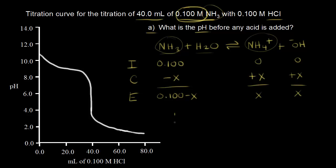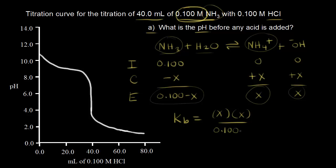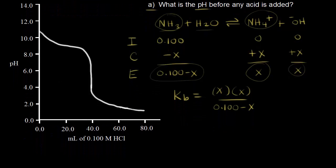Next, let's write our equilibrium expression. Since this is a base, we write Kb. We have concentration of products over reactants: Kb equals the concentration of ammonium times the concentration of hydroxide, that's X times X, over the concentration of ammonia, which is 0.1 minus X. Make sure you've seen the video on weak base equilibrium before watching this one.